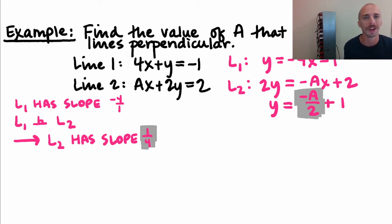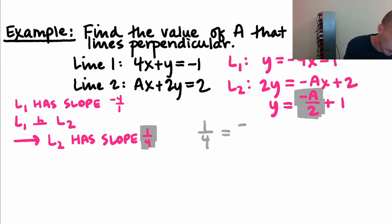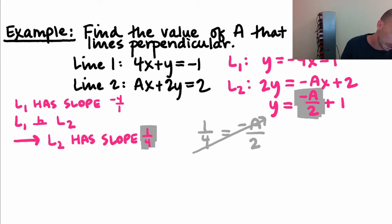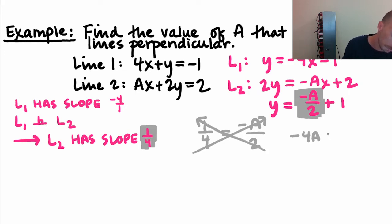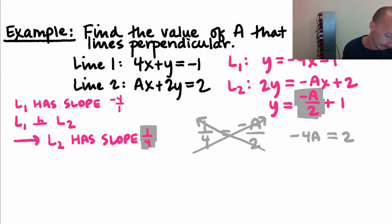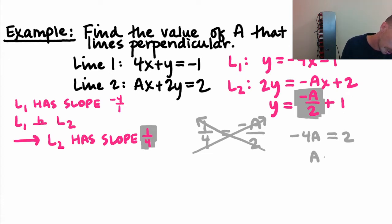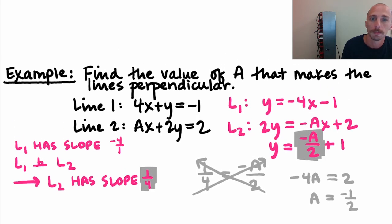This is a type of solving we haven't done yet in this class, but you need to be able to execute it. So one-fourth equals −a/2. We can cross-multiply: negative 4a equals 2 times 1, which gives −4a = 2. Dividing both sides by −4, a equals 2 over −4, which is negative one-half. That's the value of a that makes the lines perpendicular.